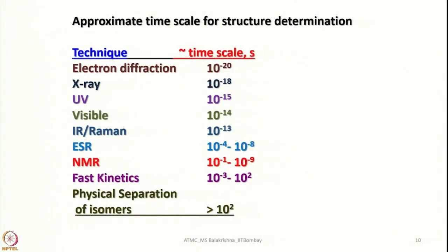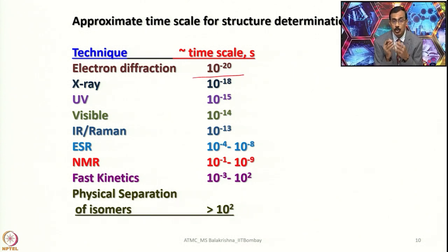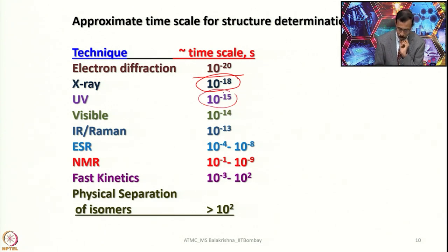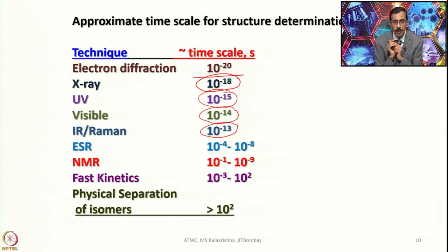Now let me give you an approximate time scale for structure determination. For example, various techniques have different associated time scales: electron diffraction and X-ray can capture processes up to 10⁻¹⁸ seconds, UV-visible up to 10⁻¹⁵ seconds, visible 10⁻¹⁴ seconds, IR and Raman 10⁻¹³ seconds, ESR from 10⁻⁴ to 10⁻⁸ seconds, and NMR from 10⁻¹ to 10⁻⁹ seconds.